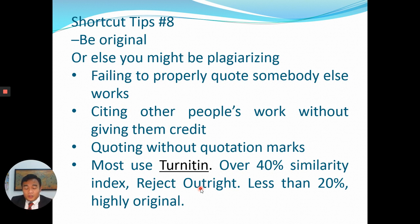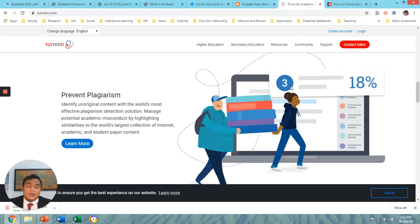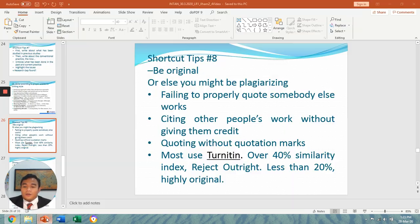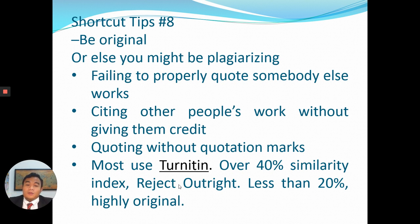Shortcut tip number eight: you must be original, or you might be plagiarizing. Failing to properly quote someone, or citing other people's work without giving credit, is plagiarism. If you quote directly, use quotation marks. Nowadays all thesis articles and journals use Turnitin, which produces a similarity index. If your similarity index is over 40%, your work will be rejected as not original. If it is less than 20%, it is highly original. Make sure you don't just copy and paste other people's work.